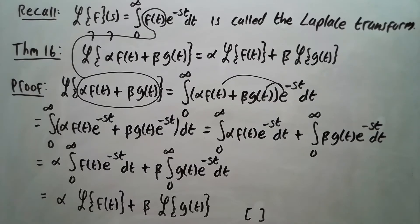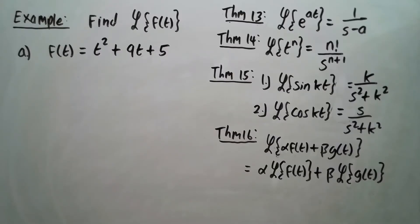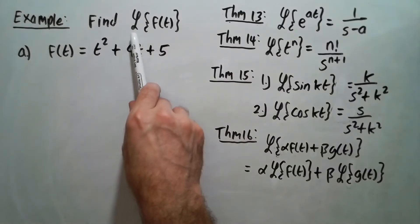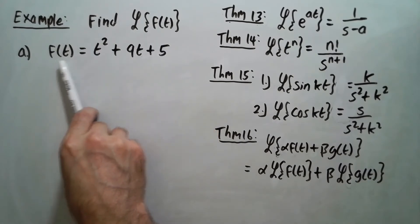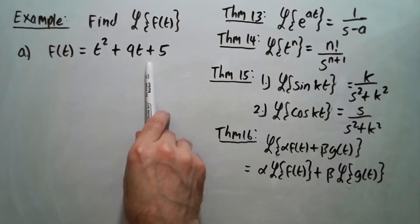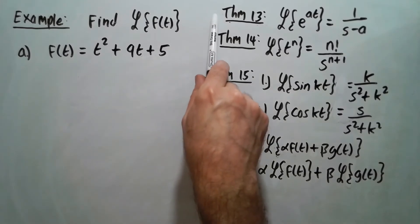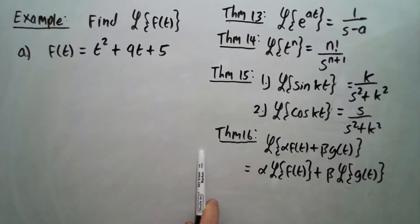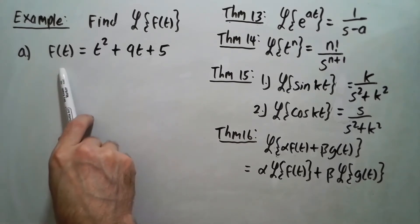Now let's do an example. Find the Laplace transform of f where f is t squared plus 9t plus 5. I've written all the theorems we've proven so far about the Laplace transform. We're first going to use Theorem 16. So applying Theorem 16 to this, we get the following.